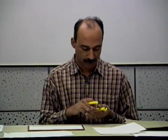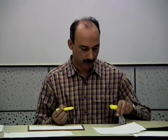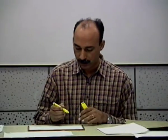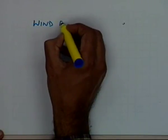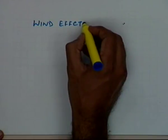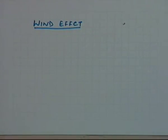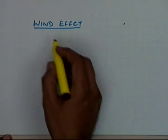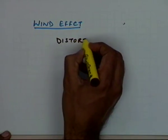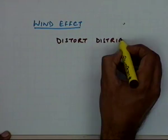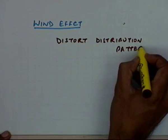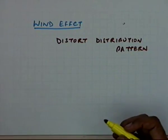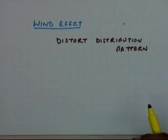Having discussed the influence of pressures on uniformity of application, let us look at the wind effect. The main effect of wind is to distort the distribution pattern. Once the distribution pattern gets distorted, achieving good overlap becomes more difficult.